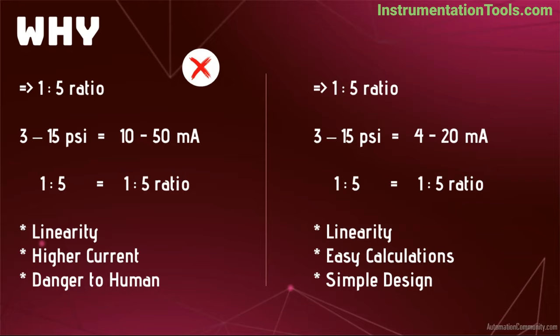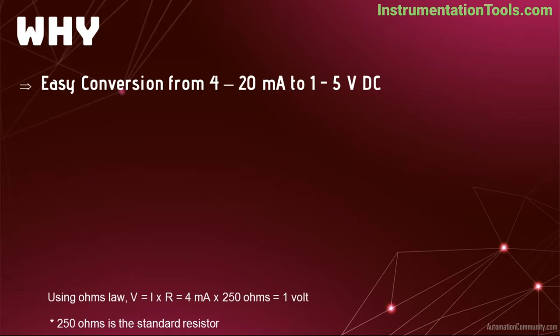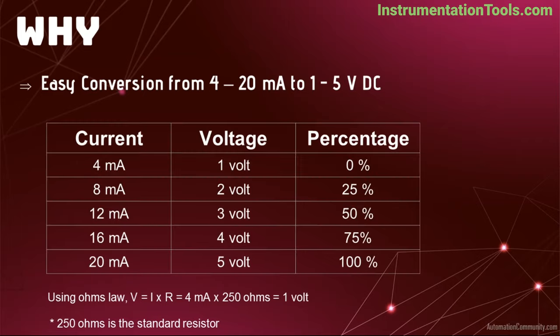One of the main advantages of using 4 to 20 mA signals is that it simplifies signal conversion from current to voltage. A simple 250 ohm precision resistor is sufficient to convert 4 to 20 mA signals into the equivalent 1 to 5 volts. Using the formula voltage equals current multiplied by resistance: 4 mA times 250 ohms equals 1 volt, and 20 mA times 250 ohms equals 5 volts. This makes calculations and conversions easy.